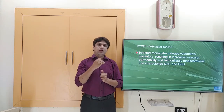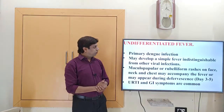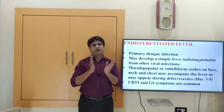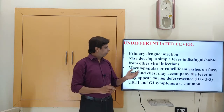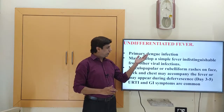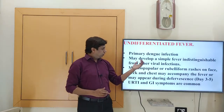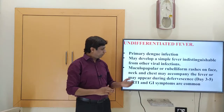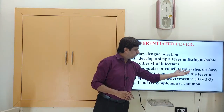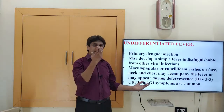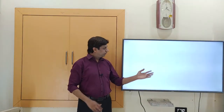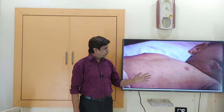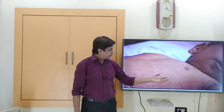The first clinical syndrome is undifferentiated fever. In a primary Dengue infection, the patient develops a simple fever that is indistinguishable from other viral infections. There can be maculopapular or rubelliform rashes on the face, neck, and chest accompanying the fever. This diagram shows maculopapular rashes on the chest and upper extremities.